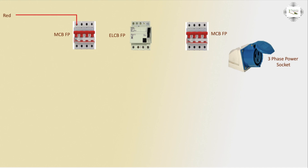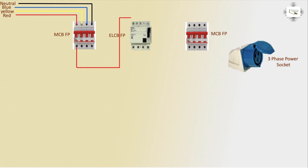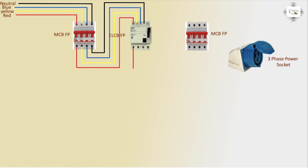The MCB phase line input connections: first phase is yellow, second phase is blue, third phase is red, and neutral is black. Then the MCB to ELCB connection — first phase, second phase, third phase, and neutral are connected from MCB output to ELCB input.